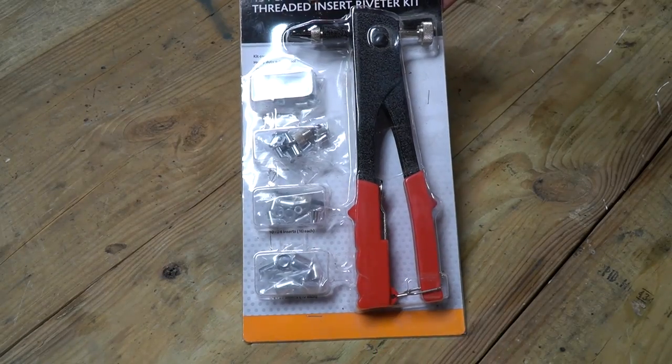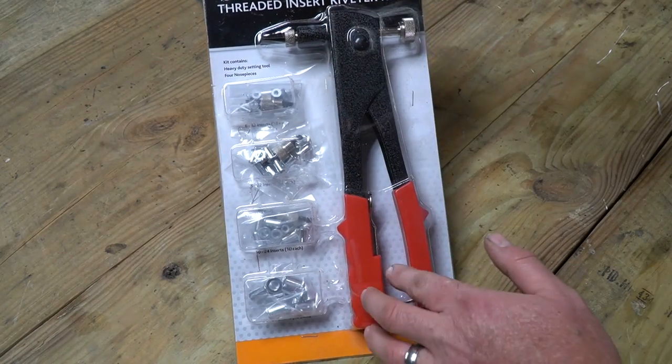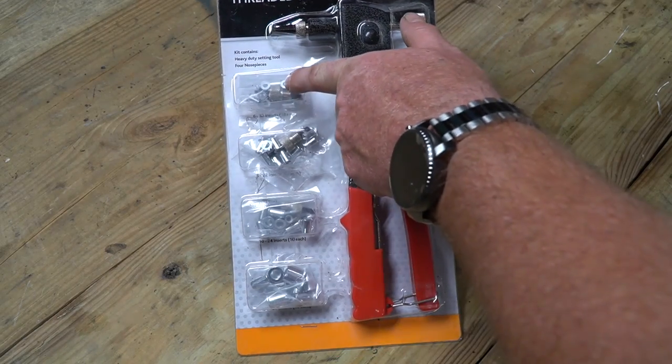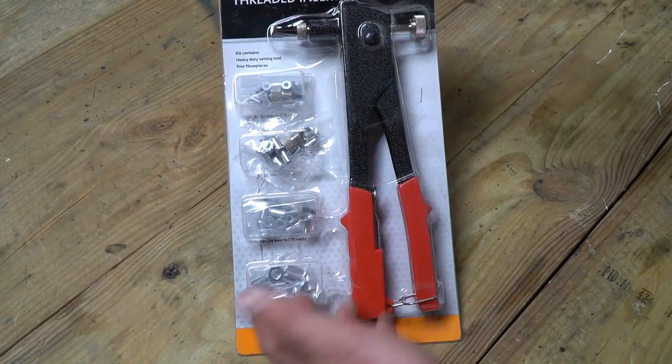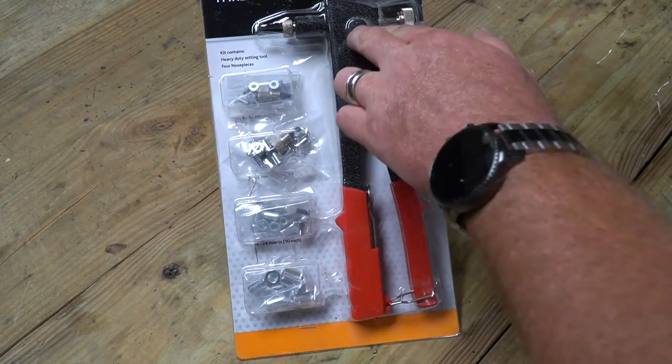Your typical threaded insert riveter kit comes in something like this. It's usually just something that hangs, you can find in pretty much any hardware store, and you'll see it usually has four or five different size of rivets and it also has the appropriate hardware to use those rivets and the riveter itself.